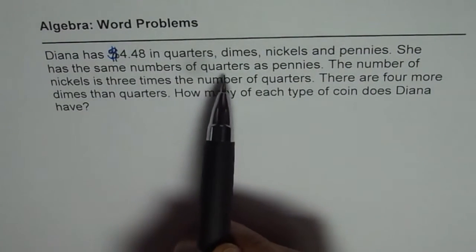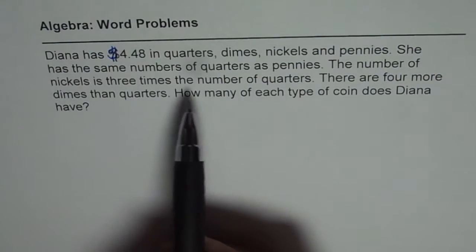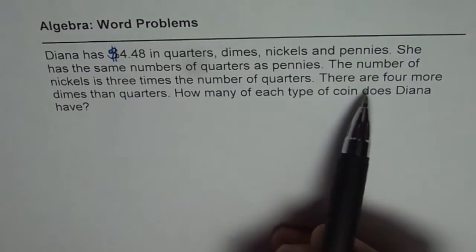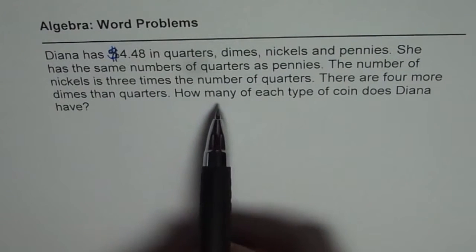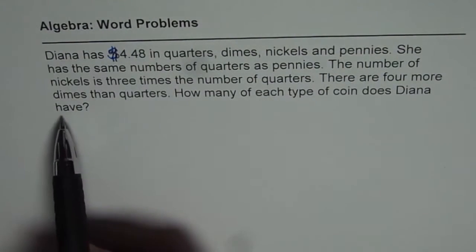She has the same number of quarters as pennies. The number of nickels is 3 times the number of quarters. There are 4 more dimes than quarters. How many of each type of coin does Diana have?